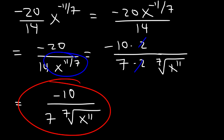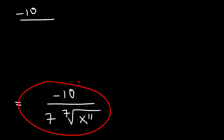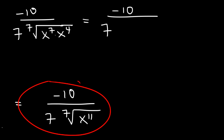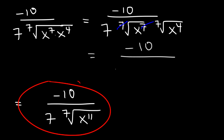We can simplify this expression further. Breaking down x to the 11th as x to the 7th times x to the 4th (since 4 plus 7 is 11), we separate the radical into two: the 7th root of x to the 7th, and the 7th root of x to the 4th. Since the 7th root of x to the 7th simplifies — 7 divided by 7 is 1 — the fully simplified final answer is negative 10 divided by 7 times x multiplied by the 7th root of x to the 4th power.